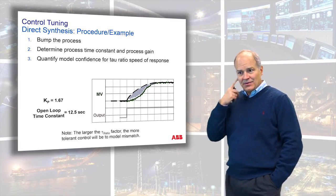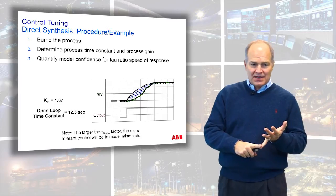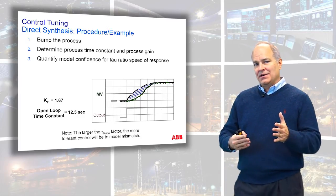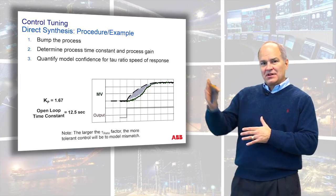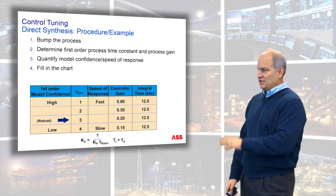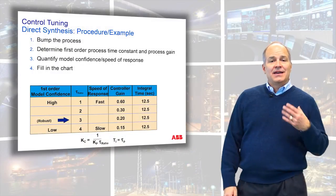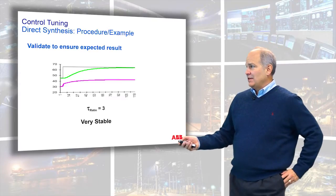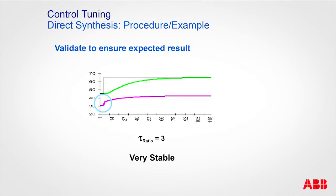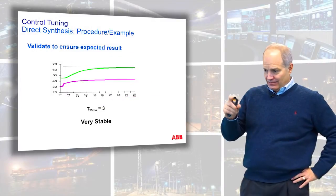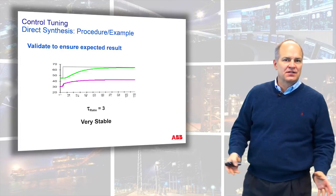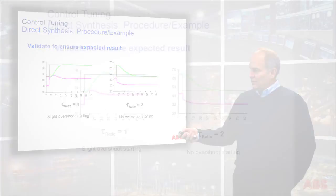Before filling in the chart, estimate the model mismatch. This response isn't a pure first-order, but it's close, so don't start at tau ratio 1 — start at tau ratio 3 and see how it looks. The validation step: change the set point with tau ratio 3 and check that the initial kick is one-third of the total output change. It's very stable but maybe a little slow. Try tau ratio 2 — the initial kick should be half the total. That looks good.